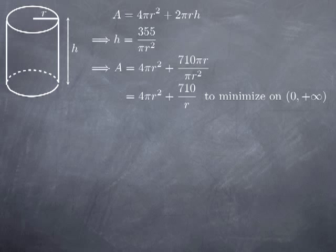We want to minimize this function on the open interval (0, ∞). The radius r must be positive, and the function is undefined at zero because we divide by r. There is no clear upper bound — we could imagine a very small radius with a very tall can, or a very large radius with a very short can.